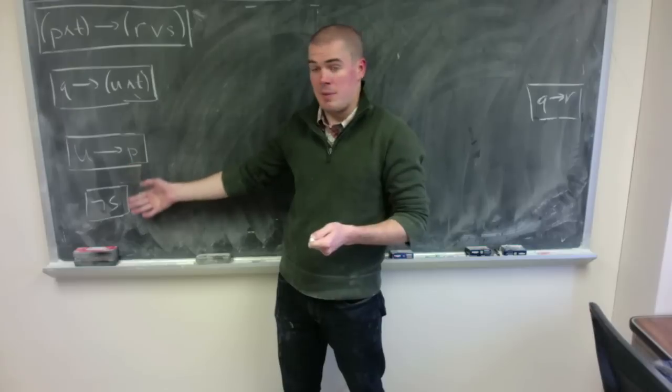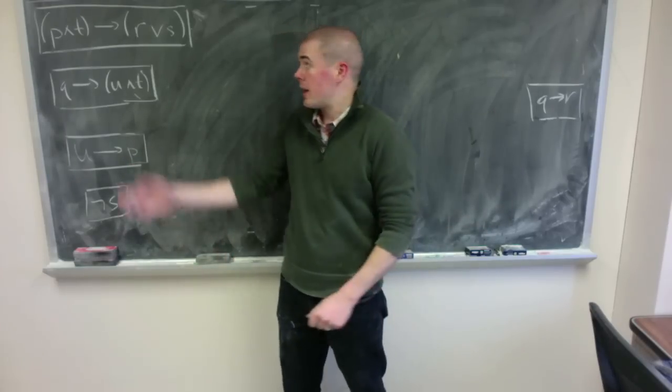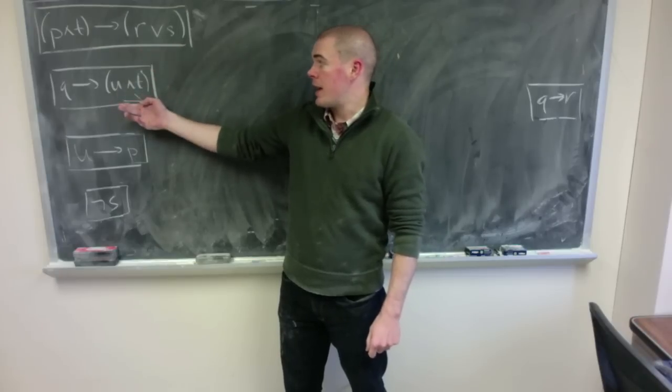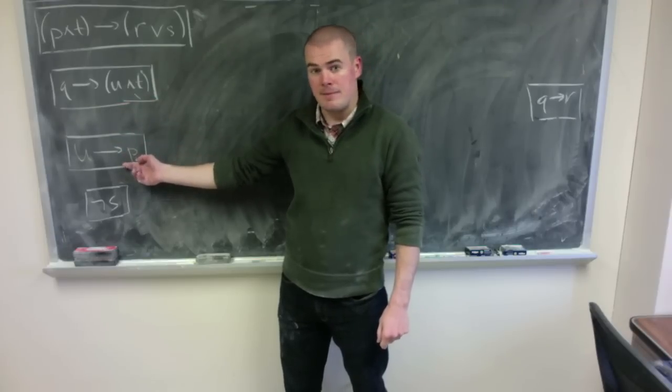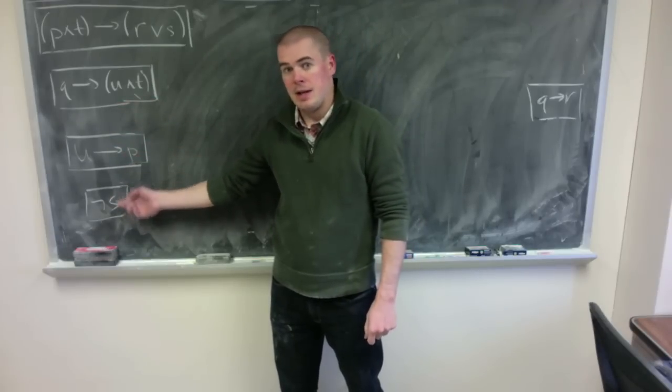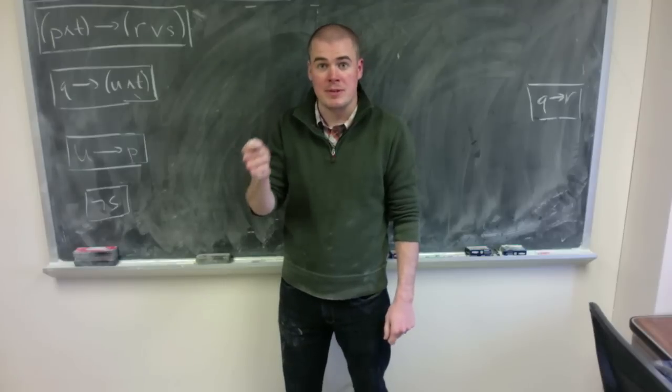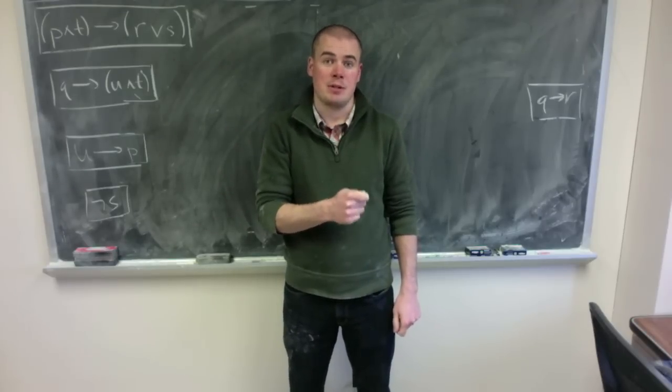So let's take these four premises and we want to show that they imply this conclusion. So I have P and T implies R or S. Then I have Q implies U and T. U implies P and not S. So I want to figure out what true things can I get from each of these. I'm going to use a few tricks. First I'm going to start from one premise at a time and go as far as I can learning as much as I can from each premise.